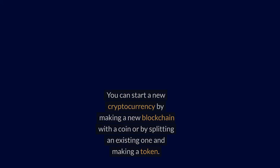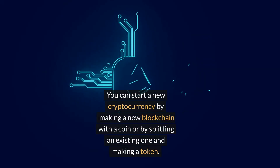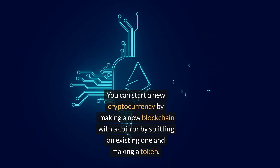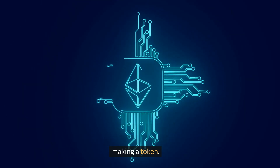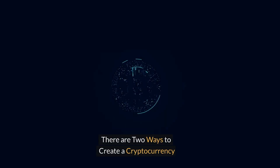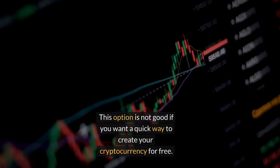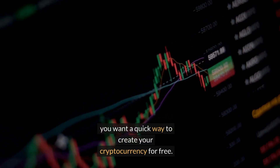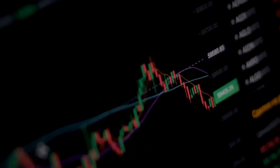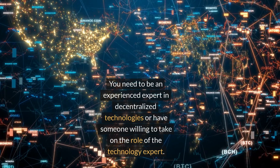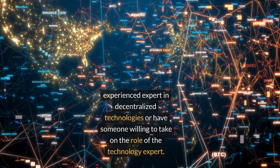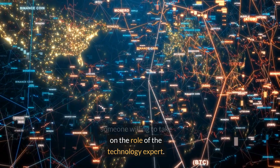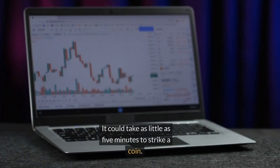In 2023 you can start a new cryptocurrency by making a new blockchain with a coin, or by splitting an existing one and making a token. There are two ways to create a cryptocurrency. Creating a coin is not a good option if you want a quick, free way — you need to be an experienced expert in decentralized technologies, or have someone willing to take on the role of the technology expert.